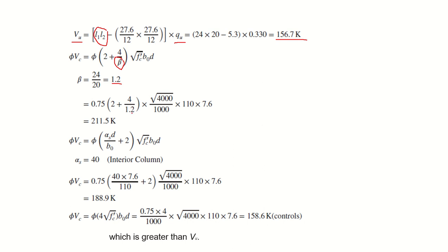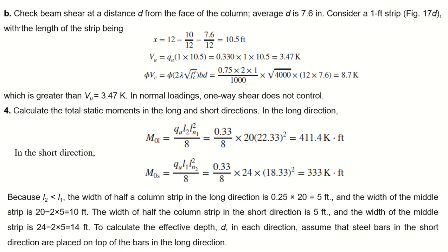Using the second formula with αs = 40 for an interior column, φVc = 188.9 kips, which is less than 211 kips but still greater than Vu = 156.7 kips. The third formula φVc = φ(4√f'c)b₀d gives 158.6 kips, which is close but still greater than 156.7 kips. Since Vu is less than all three φVc values, two-way punching shear is satisfied.